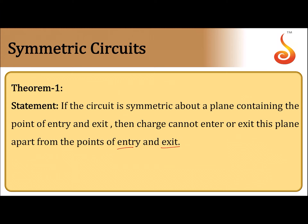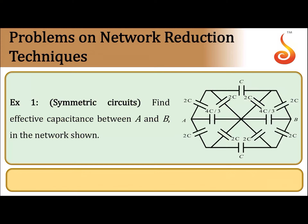To understand this, let us consider example number 1: find effective capacitance between a and b in the network shown. When we are supposed to find capacitance between a and b, we will assume that these two points are connected to a battery. So, charge enters at a and leaves at b.